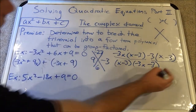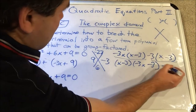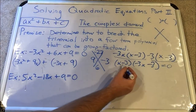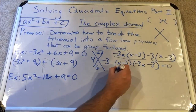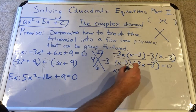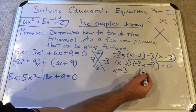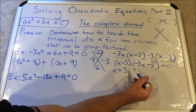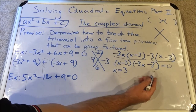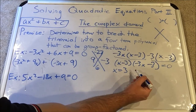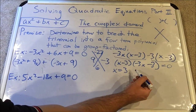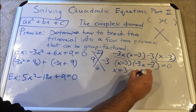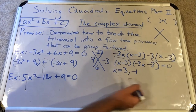Setting each factor equal to zero: from (x − 3) = 0 we get x = 3; from (−3x − 3) = 0 we add 3 and divide by −3 to get x = −1.